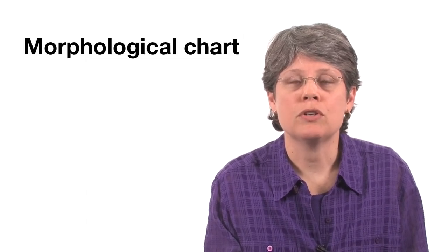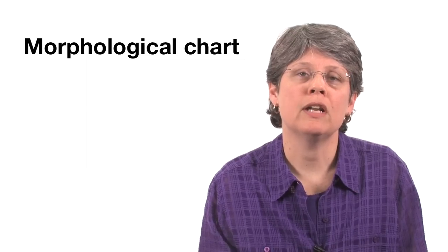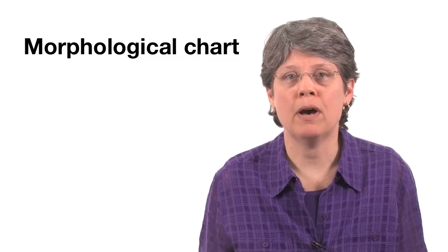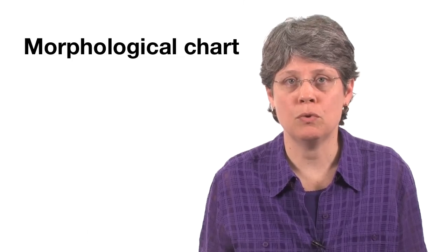Let's say that your team has finished the brainstorming process. During brainstorming, your team may have decomposed the problem into a number of functional parts or design blocks. Now you have incomplete design solutions. In engineering, there is a tool called a morphological chart or a morph chart that allows you to take these partially formed design ideas and combine them into full solutions.